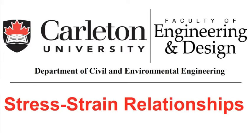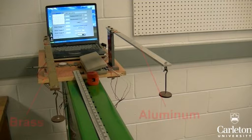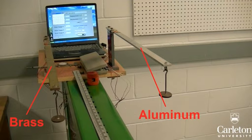The Department of Civil and Environmental Engineering would like to present this video on using strain gauges when testing beams of various materials in bending. We will be applying a variable load onto the end of two cantilevered beams, one made out of brass and the other out of aluminum.